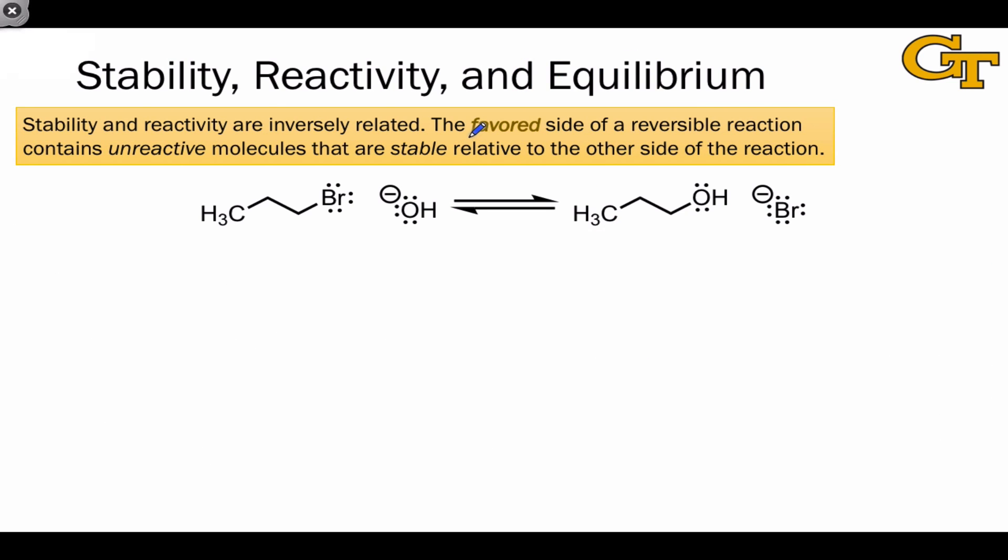You'll hear the terms favored and disfavored used to describe the sides of a chemical reaction. And you can think of favored as synonymous with thermodynamically stable. The favored side of a chemical reaction contains unreactive molecules. In the examples shown here, the favored side is the right hand side. And by the end of this video series, you'll be able to predict this with ease.